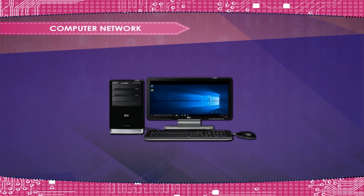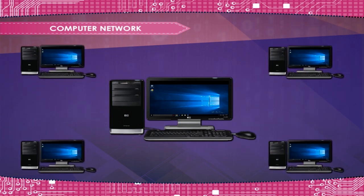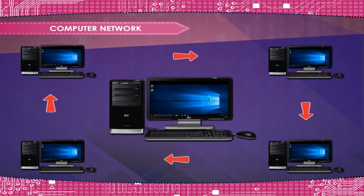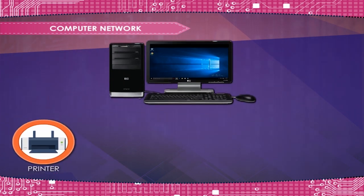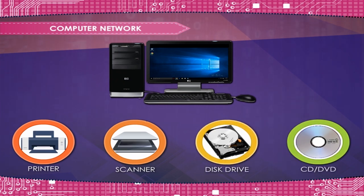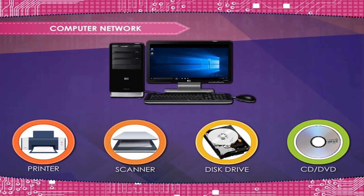A computer network is a group of two or more computer systems connected to each other. This means that every computer in the network can send information to the others. The main advantage of networking is to share resources such as printers, scanners, disc drives, and CD or DVD drives. Multiple users can communicate among themselves and share data and information.